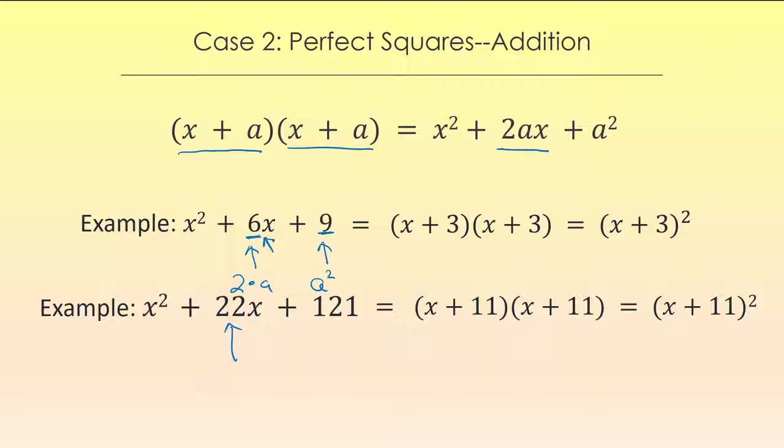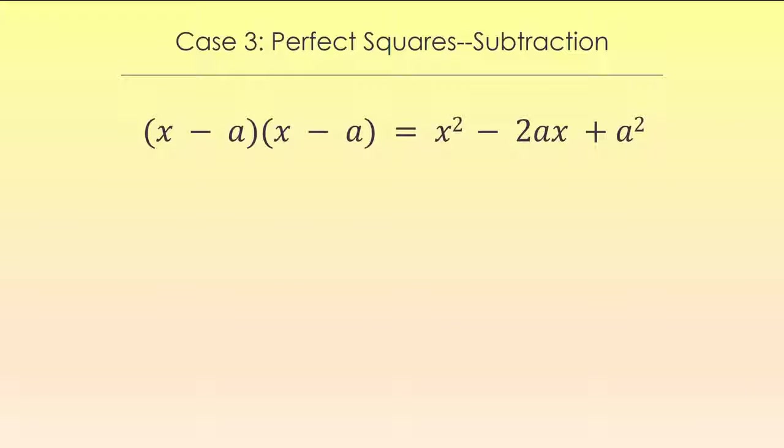Okay, the next one is pretty similar. Perfect squares, but this time there's subtraction instead of addition. And the only difference is that the middle term is going to be negative. The a squared is still positive because a negative times a negative is a positive.